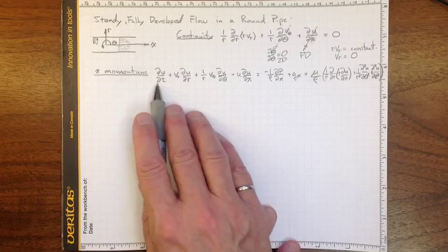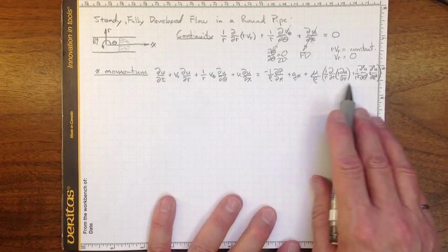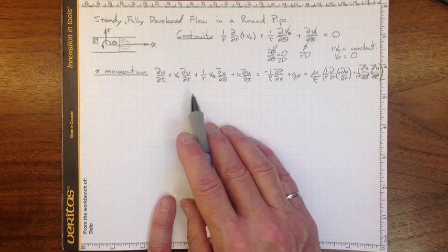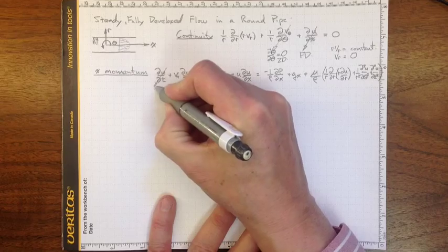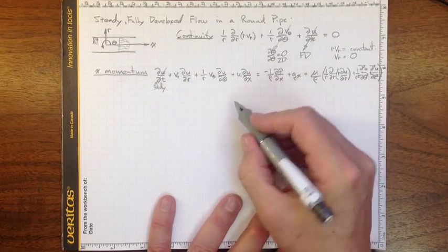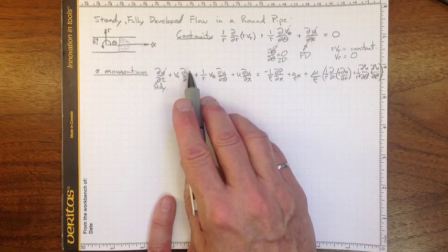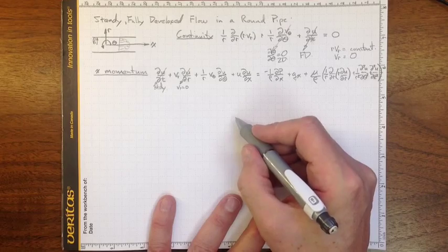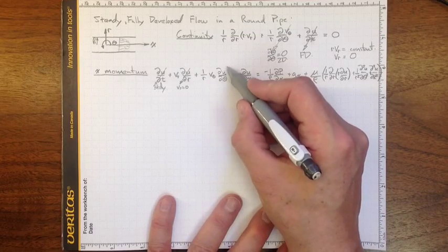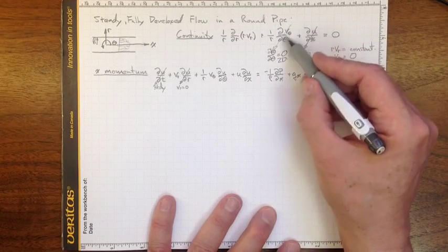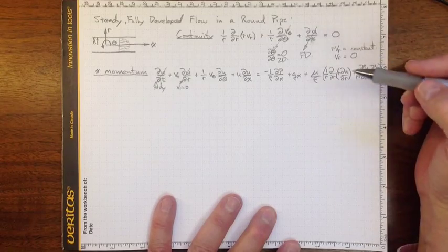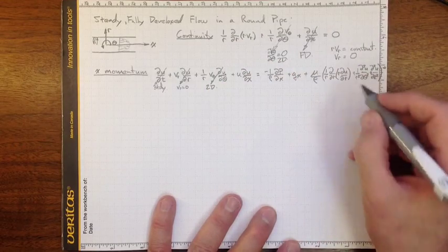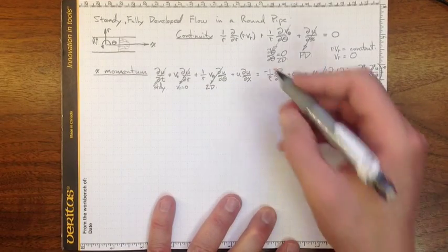Now we take the x-momentum equation. It has the same components we're used to in Cartesian coordinates, except with some 1/r terms to account for the polar system. We can simplify: the time derivative goes away because the flow is steady, the v_r·(du/dr) term goes to zero because v_r = 0, du/d(theta) goes to zero because the flow is 2D axisymmetric, and du/dx goes to zero because the flow is fully developed.